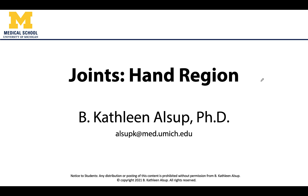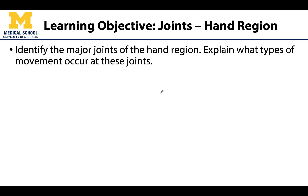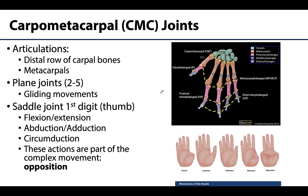Hello all, this is Dr. Alsup, and in this learning objective video we will be discussing the joints of the hand. All of those long-name joints that we introduced in the first MSK session — we will spend a bit of time discussing what types of actions can occur at these joints. We will start with the most proximal of the joints of the hand: the carpometacarpal joints, often abbreviated as CMC.